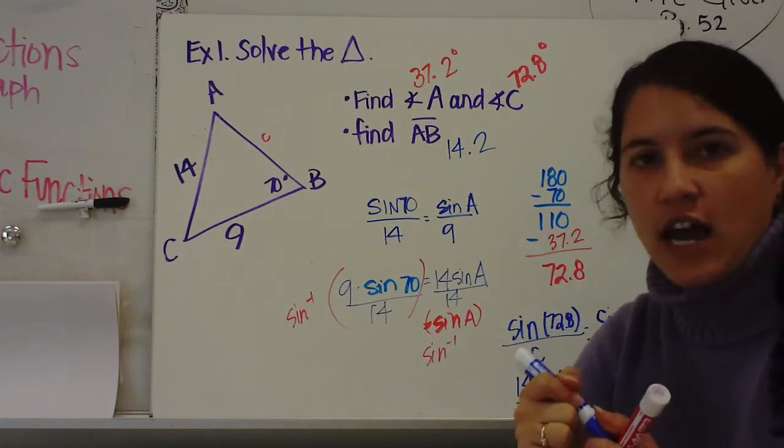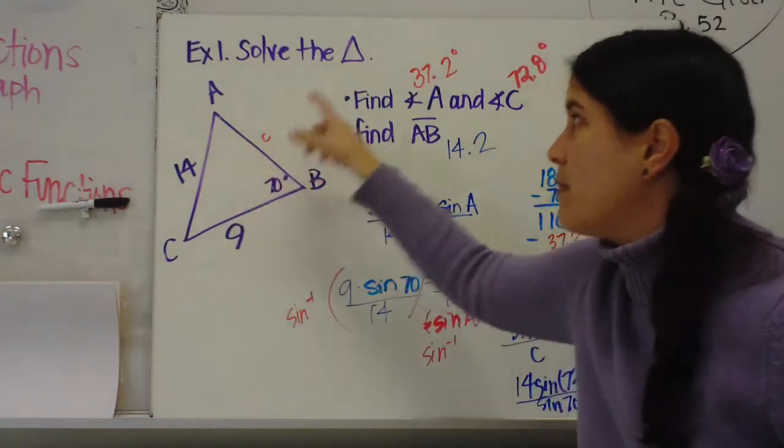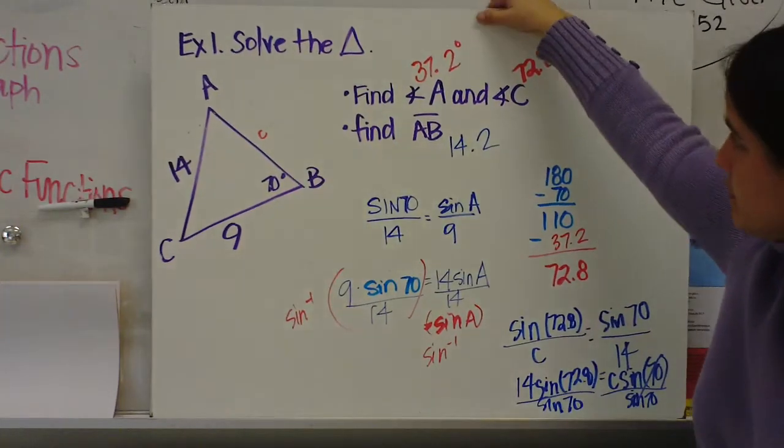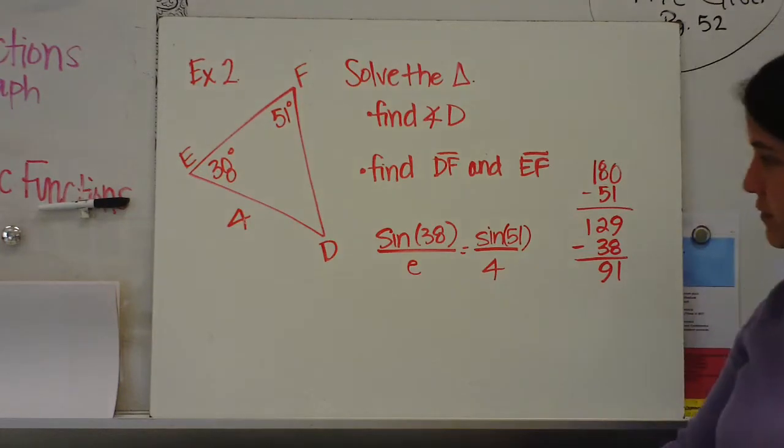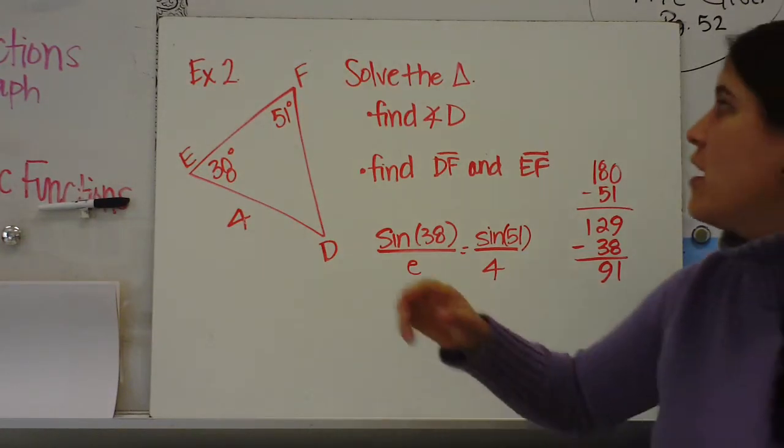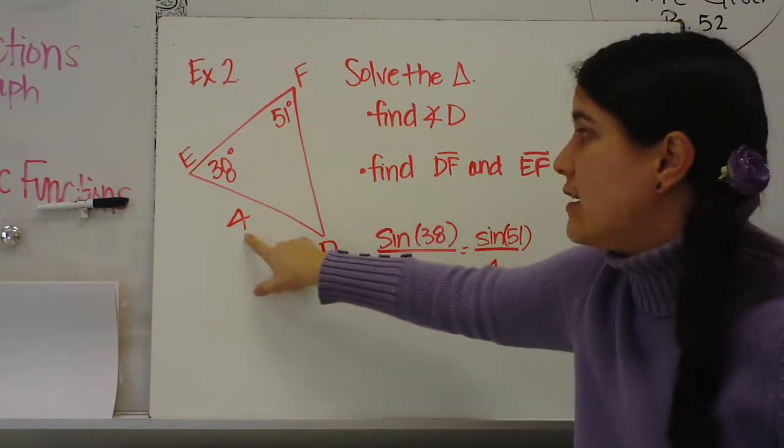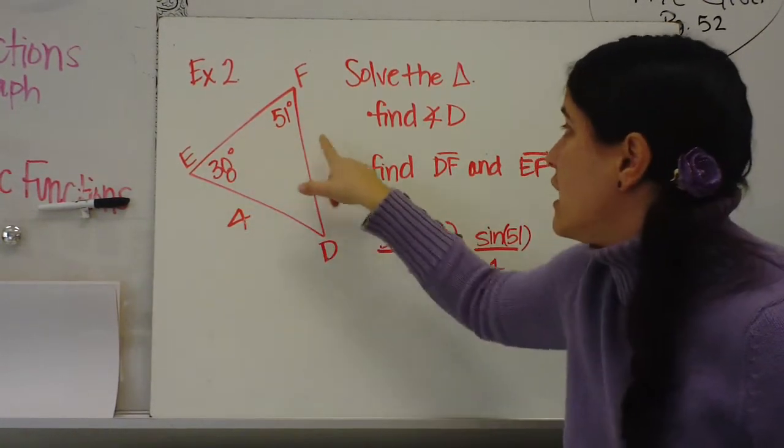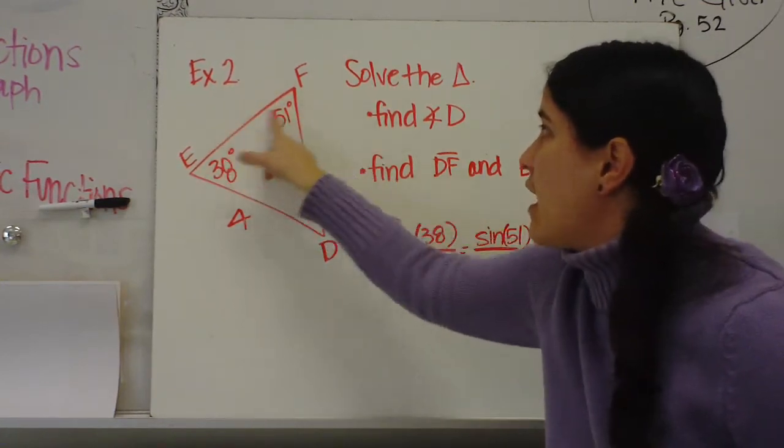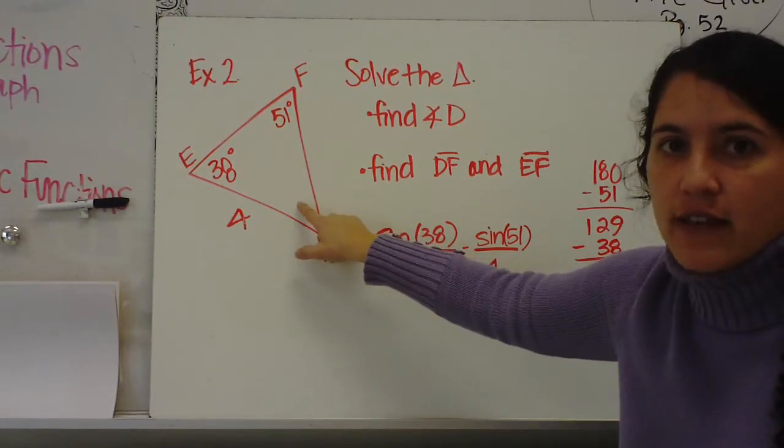So I've used the law of sines to set up proportions to find my missing angles and my missing sides. Example 2, solve the triangle. In this one, I was given two angles, a side, but I need to find angle D and I need to find these two sides, EF and DF.